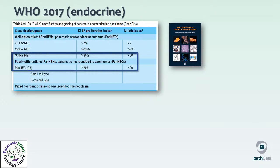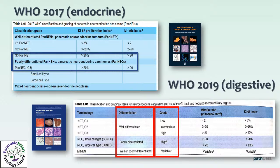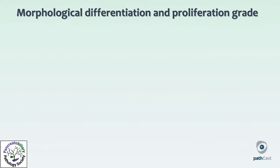In the 2017 classification, pan-NECs were still graded G3. In the latest classification of digestive tumors, however, differentiation and proliferation grade have been well separated. Only NETs are to be graded according to proliferation index, either Ki67 or mitotic index. NECs of the large cell or small cell types are high-grade by definition and are not to be graded — saying that a pan-NEC is G3 is no longer needed.